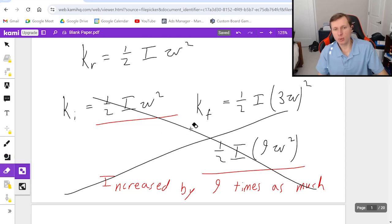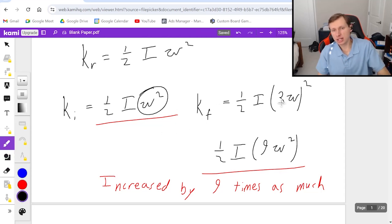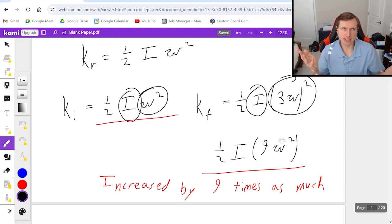The mistake we made is that we assumed incorrectly that the angular velocity is the only thing changing. But that's not true because we know moment of inertia is dependent on the concentration of mass.